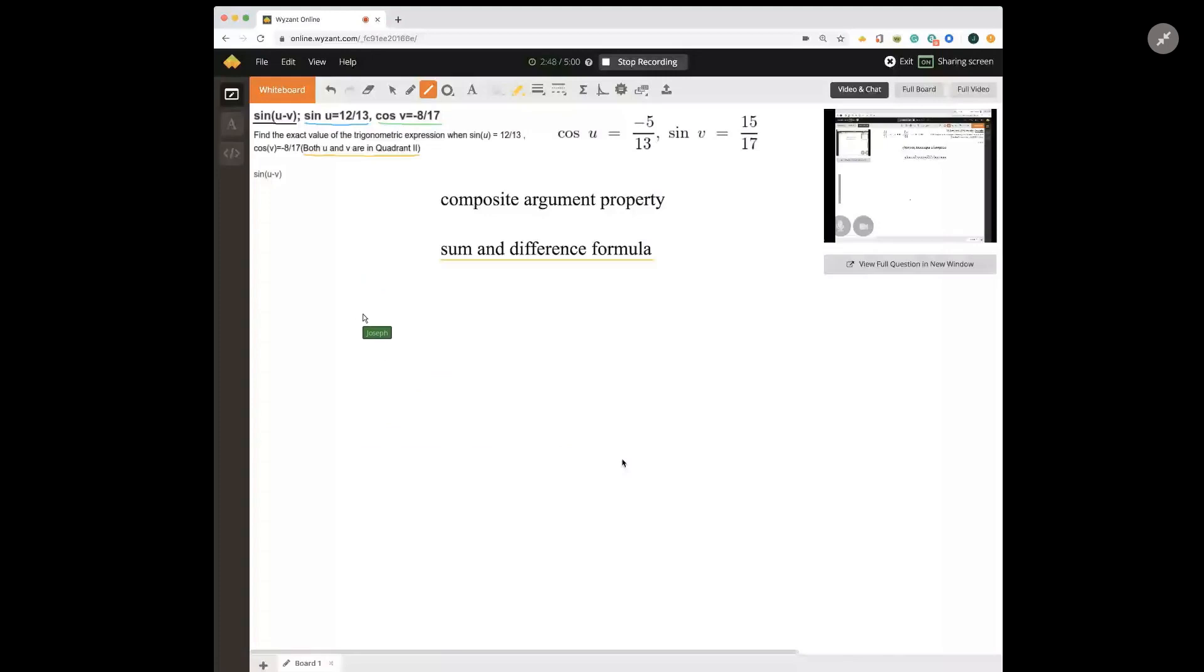This is a formula you will want to memorize. Now you might note, oh, no, it's got a and b, not u and v. Those are just names. U is like a, v is like b.